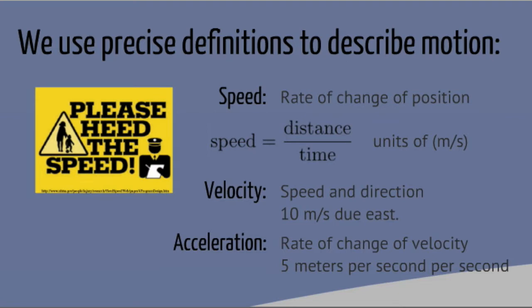I will start with speed. Speed is the rate of change of position. As you move down the road you might be familiar with going 50 miles an hour or 50 kilometers an hour. Your speed is your distance divided by the time. We use units of meters and seconds.